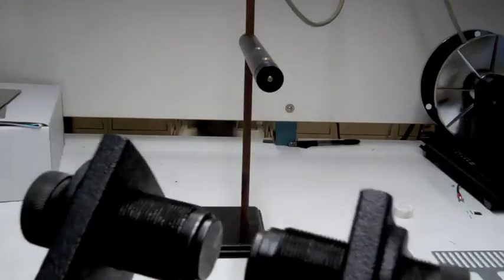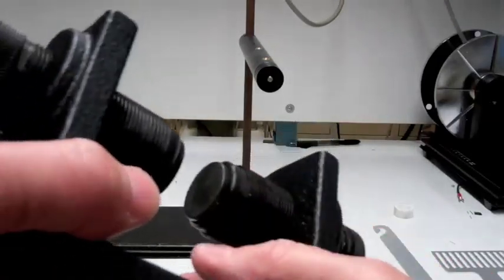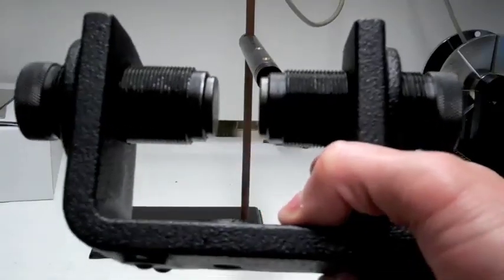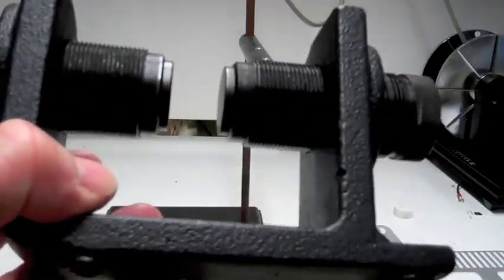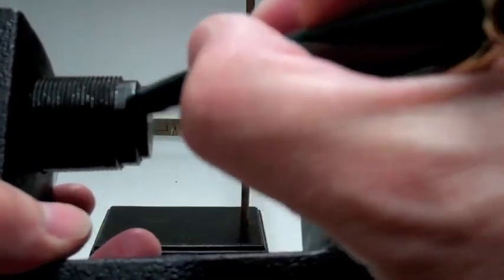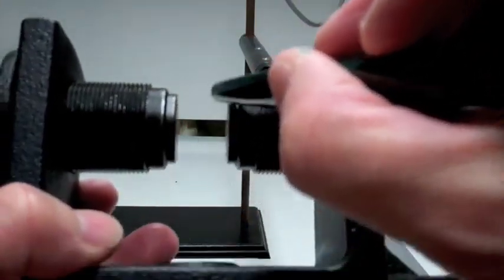I would like to do another demonstration of eddy currents and the resulting magnetic braking that will occur on a pendulum. What I have here are two magnets. This is the north pole of this magnet and the south pole of this magnet.